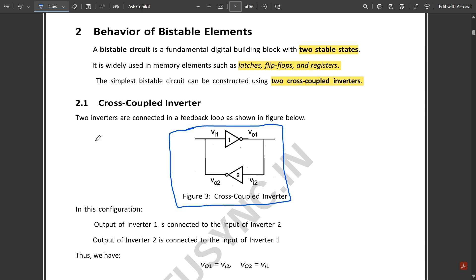In this cross-coupled inverter, one inverter output is fed back to the input in order to give the same response. This is the functioning of the cross-coupled inverter.